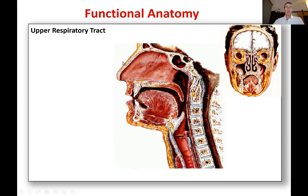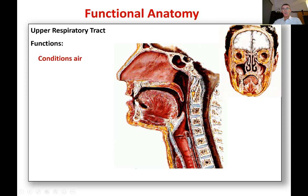So what do we do in the upper respiratory tract? There are several functions. The first one is it conditions air. In the nasal cavity, you can see there are folds of mucus tissue called conchi and turbinates. The conchi is the space between the turbinates. When you're breathing in through your nose, air moves in very turbulent flow through there, getting humidified and getting all the dust particles filtered out.